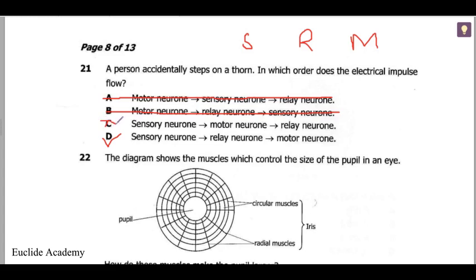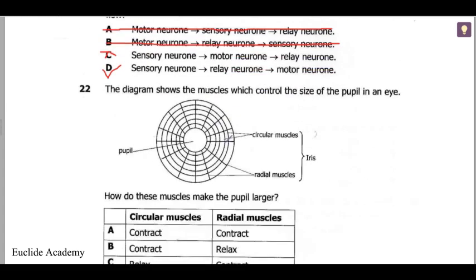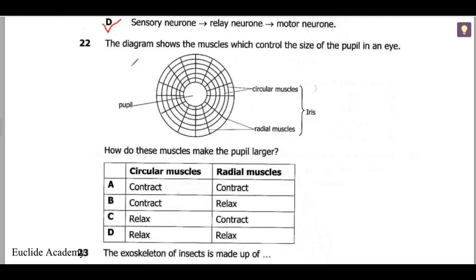Question 22: the diagram shows the muscles which control the size of the pupil in an eye. This is the pupil, and these are the circular muscles going around, and then we have the radial muscles going outward. This is the iris. How do these muscles make the pupil larger?